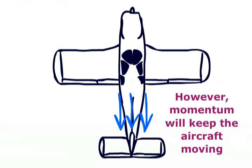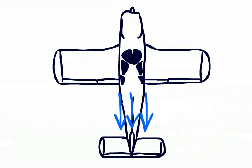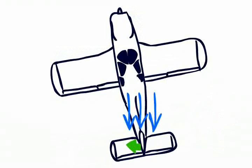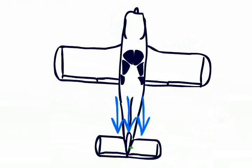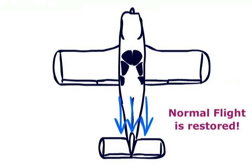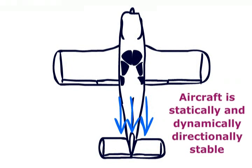However, momentum will keep the aircraft going through this point, another angle of attack will be created, and the process will repeat through a series of diminishing oscillations. This shows the aircraft is both statically and dynamically directionally stable.